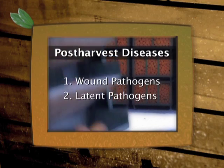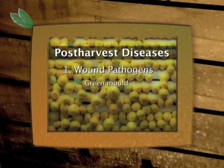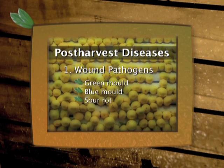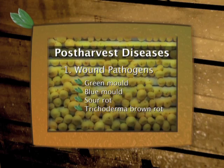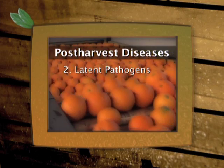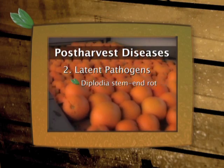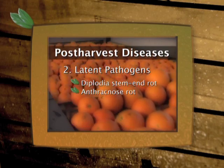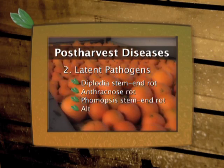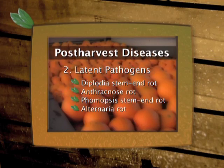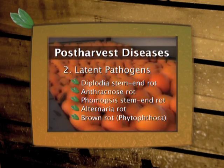The most economically important wound pathogens are green mould, blue mould, sour rot and trichoderma brown rot. Latent pathogens include diplodia stem end rot, anthracnose rot, phomopsis stem end rot, alternaria rot and brown rot caused by phytophthora.